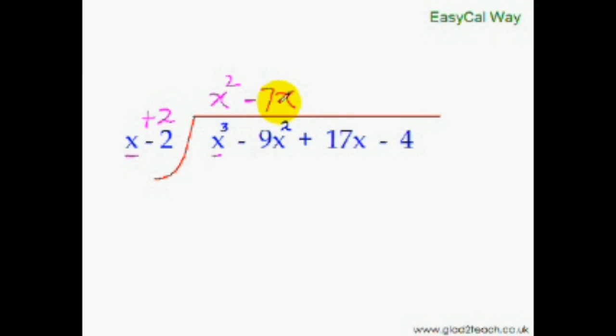We did not put minus 7x square over here. Why? Because we knew that the powers of x will gradually go down. If this is x square, then the next term will have the power of x as 1.